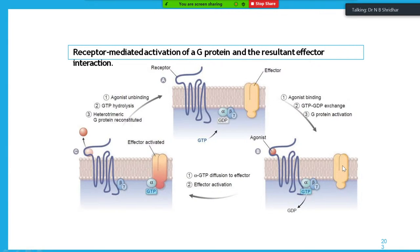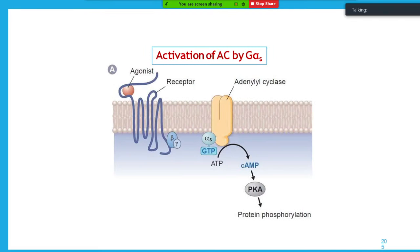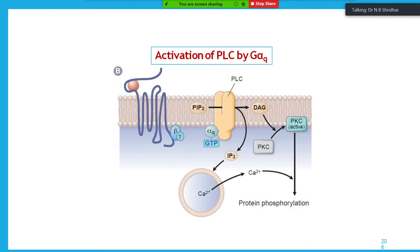G protein-coupled receptor activation proceeds via GTP-GDP exchange, alpha-beta-gamma separation, and GTP conversion to GDP — initiating the molecular mechanism. Activation via Gs involves protein kinase A phosphorylation. Activation via Gq involves phospholipase C, which generates inositol triphosphate and diacylglycerol. Inositol triphosphate releases intracellular calcium, which acts with protein kinase C leading to protein phosphorylation whenever a neurotransmitter binds to the receptor.